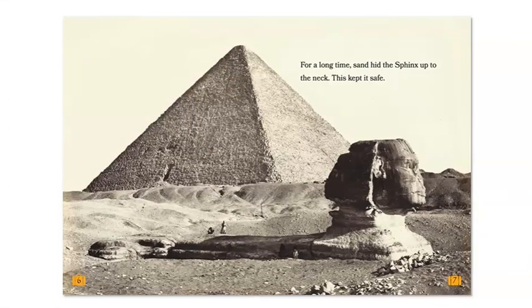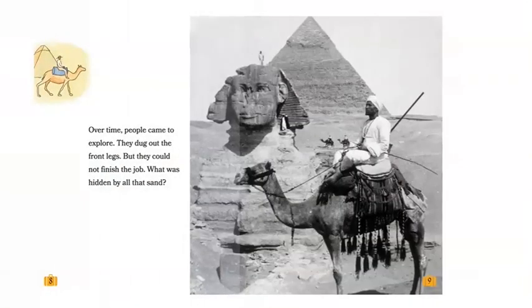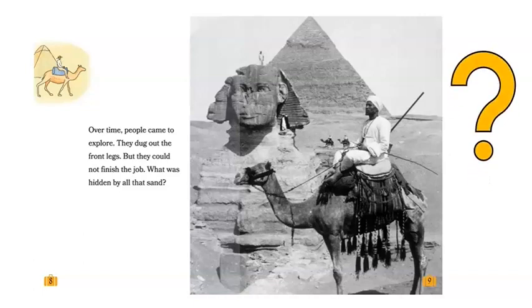For a long time, sand hid the Sphinx up to the neck. This kept it safe. Over time, people came to explore. They dug out the front legs, but they could not finish the job. What was hidden by all that sand?